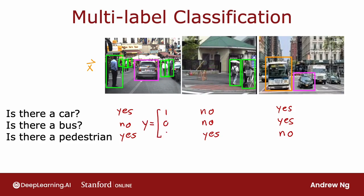So in this case, the target output Y is actually a vector of three numbers. This is distinct from multi-class classification, where for, say, handwritten digit classification, Y was just a single number, even if that number could take on 10 different possible values. So how do you build a neural network for multi-label classification?